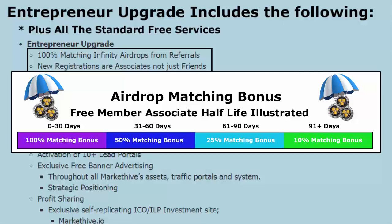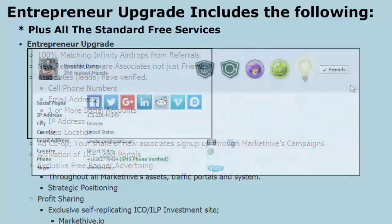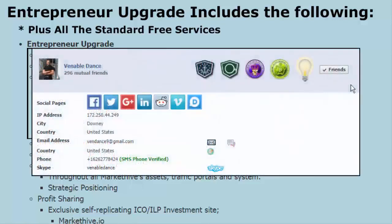We think that's more than fair — we want you to try it out and see that it works. New registrations are associates, not just friends, and we've already identified that associate leads have verified cell phone numbers, email addresses, one or more social accounts, IP addresses, geolocation, etc.